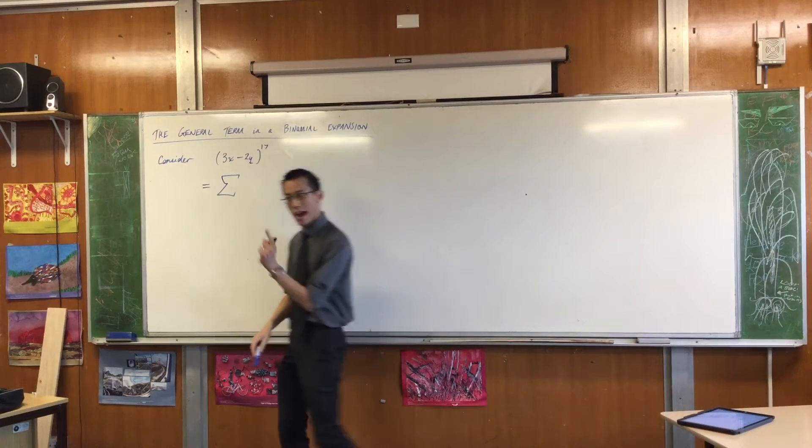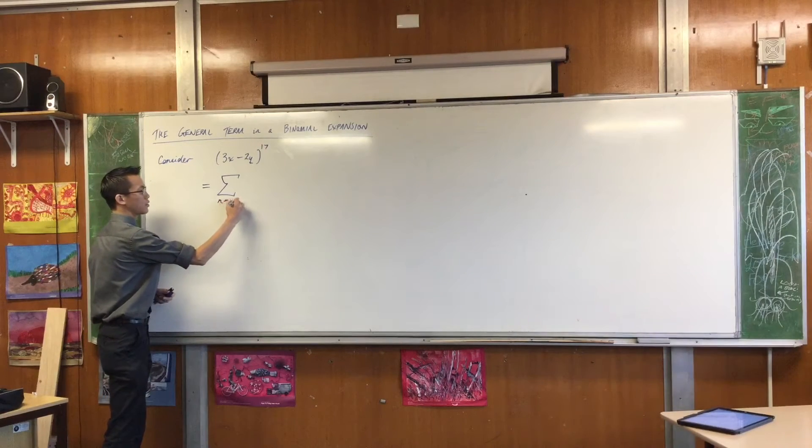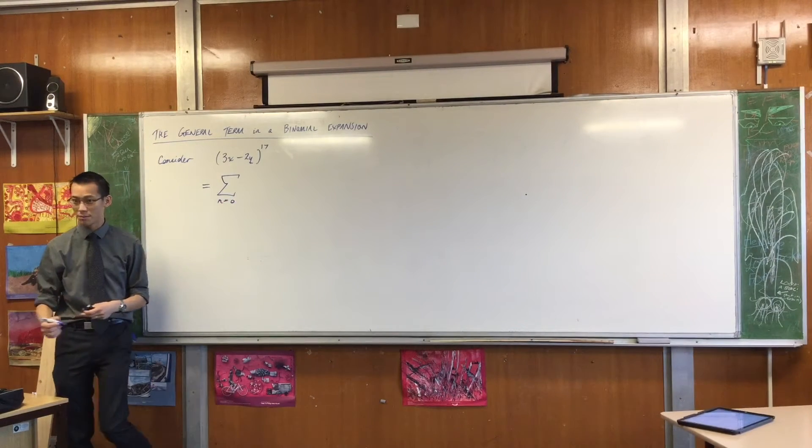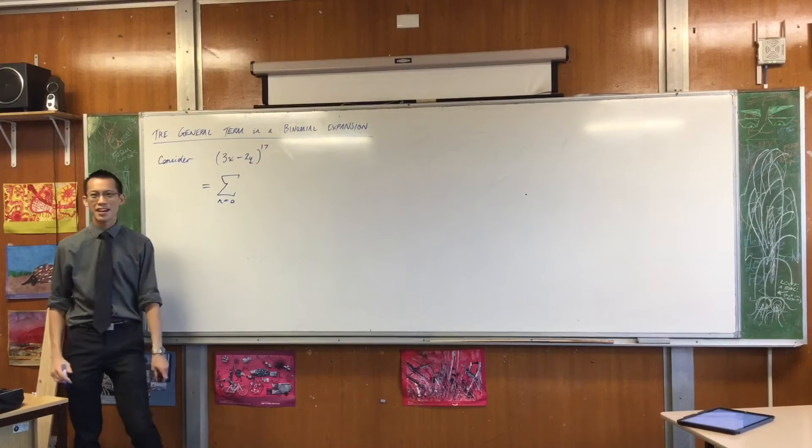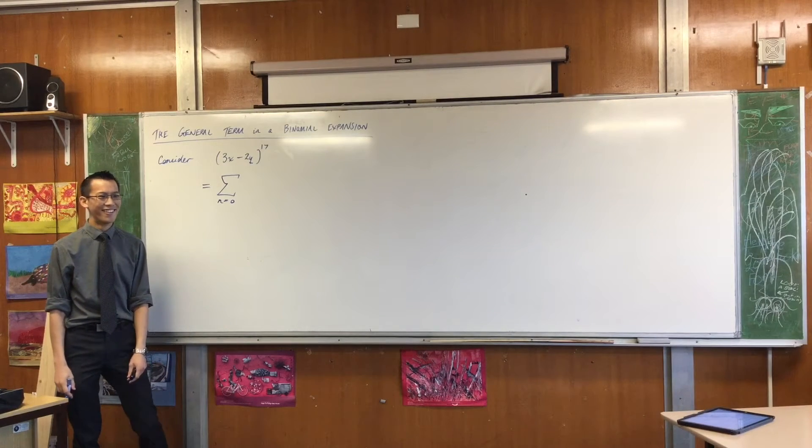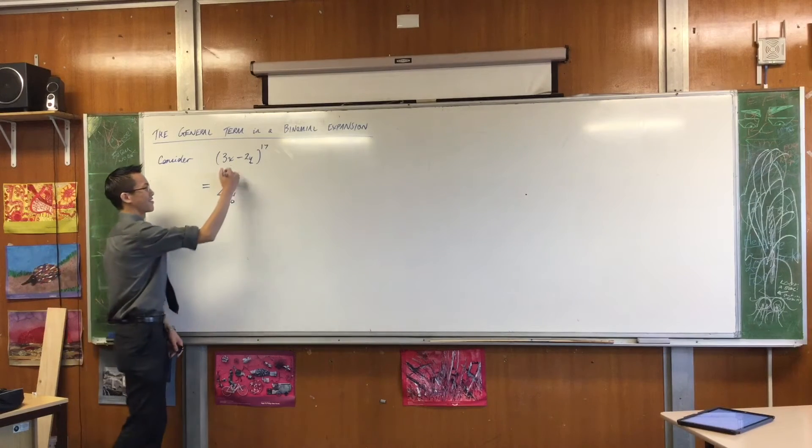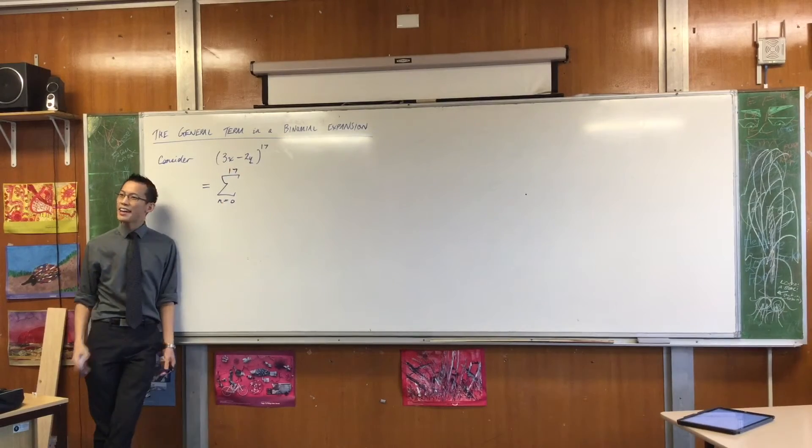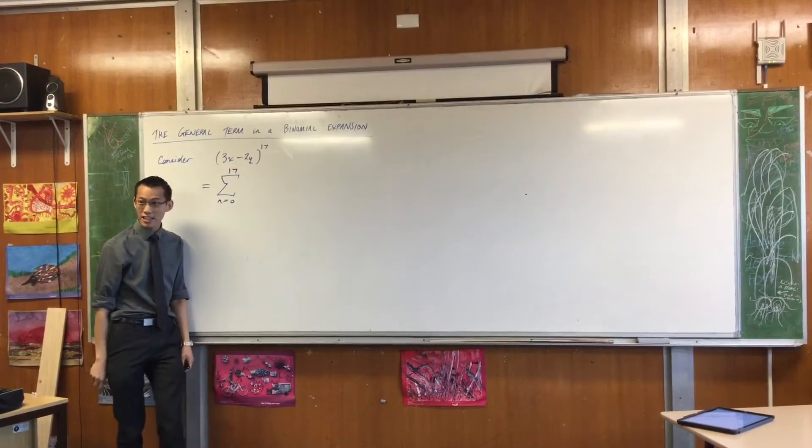Okay? So I could say, I could add up from n equals 0, that's the first term that I would count. What's the last term? What would the last term be? 17.